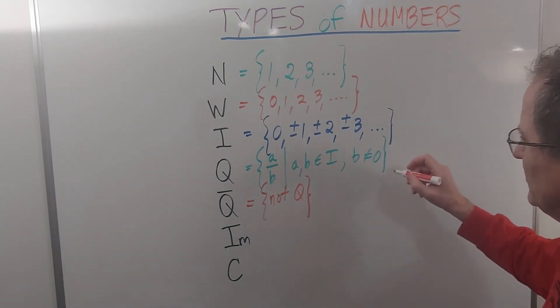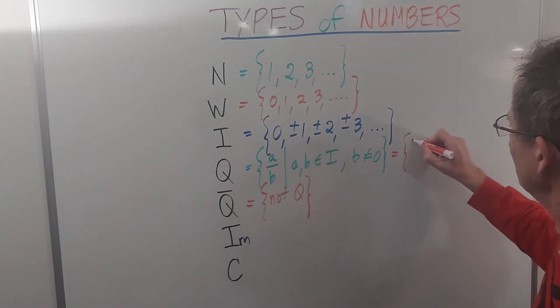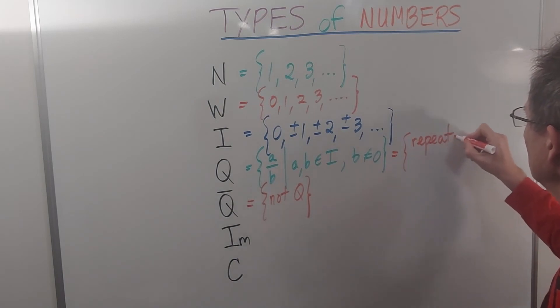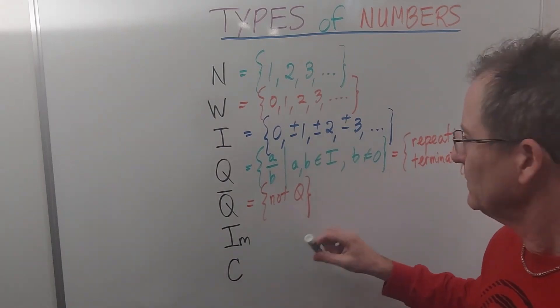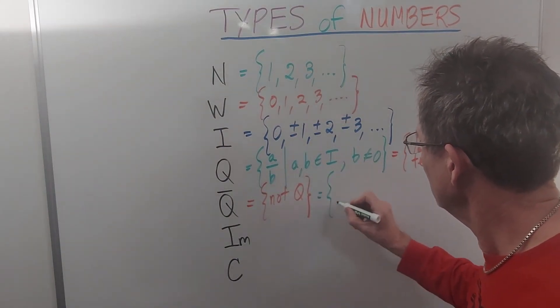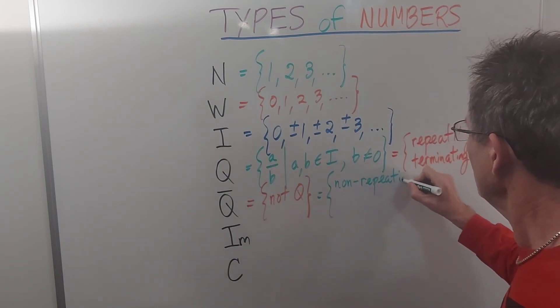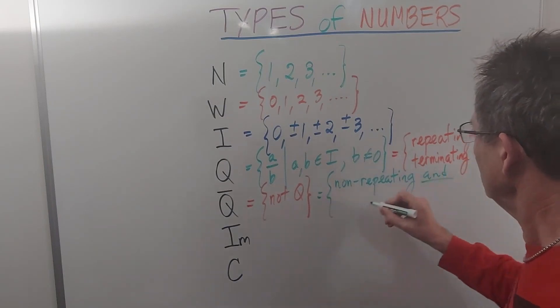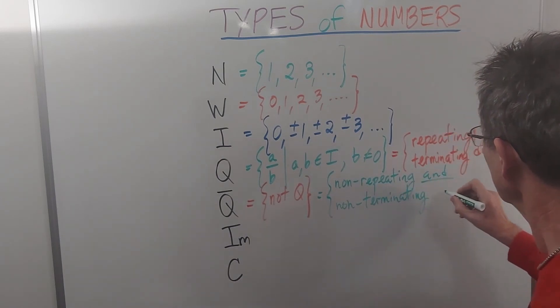And so if we look into this a little bit further, the rational numbers consist of either repeating or terminating decimals. So the irrational numbers consist of the set of non-repeating and non-terminating decimals.